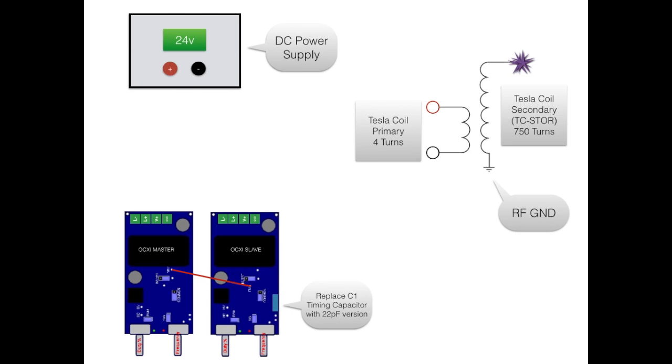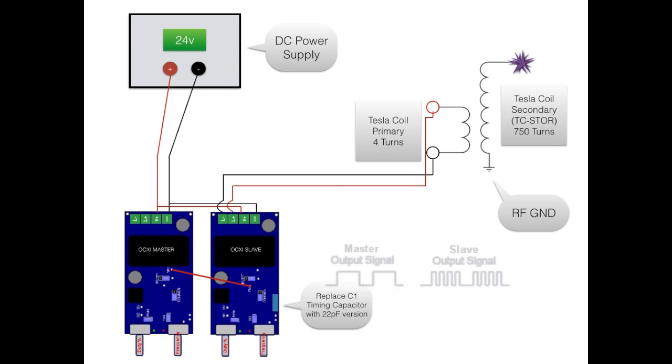In this diagram you can see how the various parts are connected together. The OCXI is used to pulse the primary coil at around 1 megahertz, which then induces current at high voltage in the secondary coil. The thousand microfarad capacitor is acting as a decoupling capacitor to reduce voltage drops.